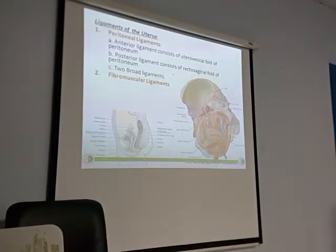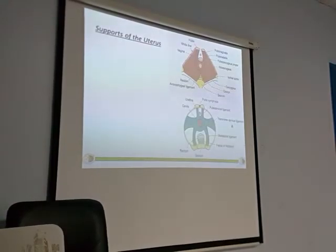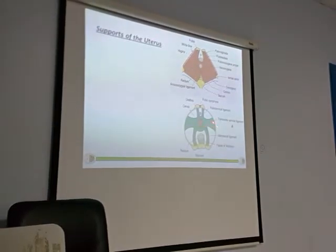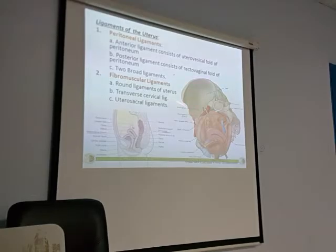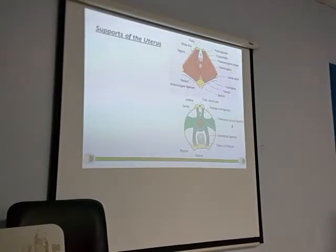But the main important structures will be the fibromuscular ligaments. One is the round ligament — you can see in this picture there is a round ligament holding the uterus. The second is the transverse cervical ligament. And the third one is the uterosacral ligament. If you imagine the cross section of the pelvis from below, you can see the cervix here with the transverse cervical ligament attached to the cervix and to the sides of the pelvis. And we have the uterosacral — coming from the uterus to the sacrum. So all these ligaments are pulling from the front, behind, and everywhere, and they keep the uterus in the normal position.